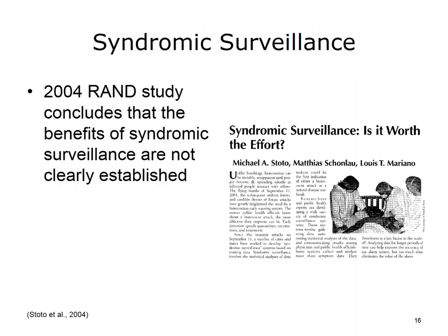Given this broad list of data sources, syndromic surveillance systems have to deal with trade-offs. Many indicators may pick up serious health risks but come with the trade-off of identifying numerous false positives. In 2004, the RAND Corporation, a respected research firm, released a report questioning the benefits of syndromic surveillance by providing an analysis of the drawbacks and benefits of such a system.